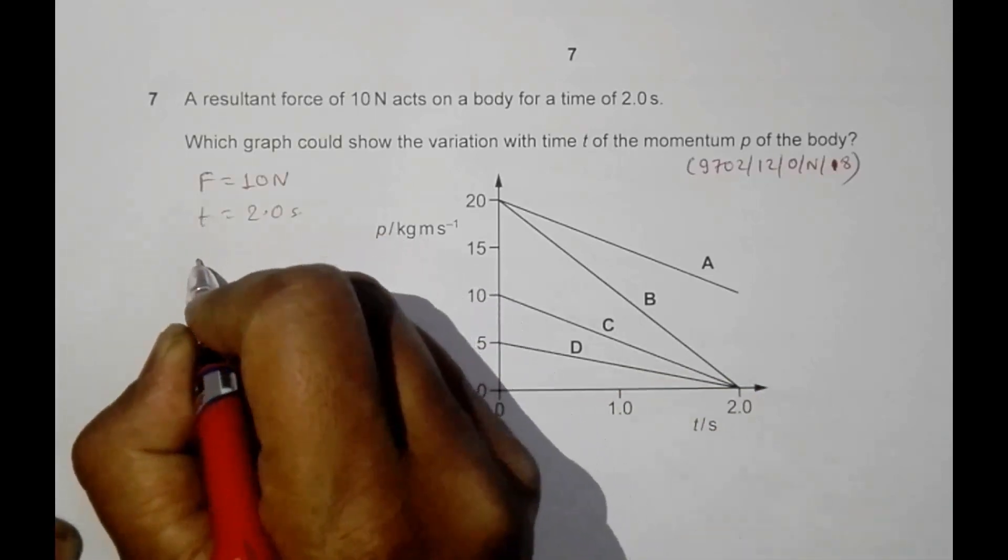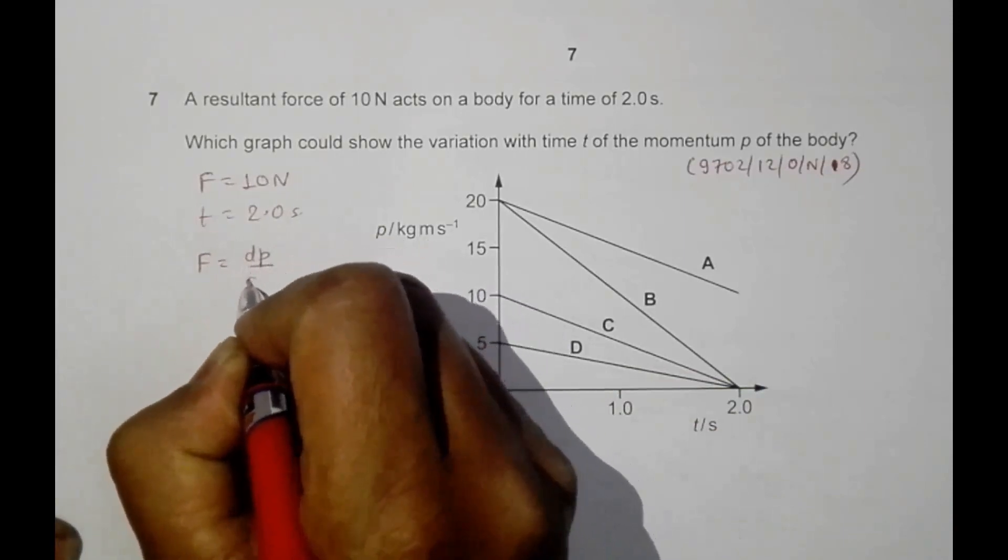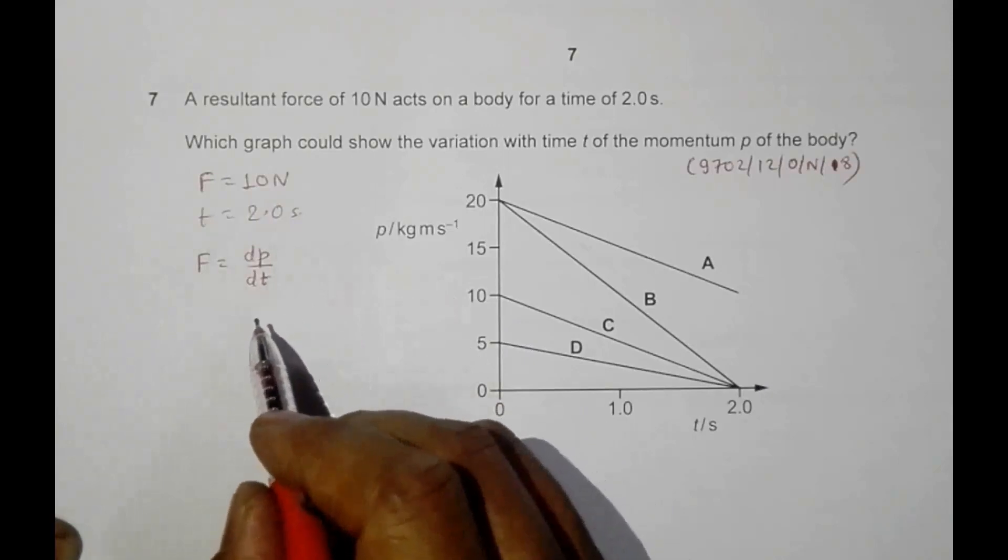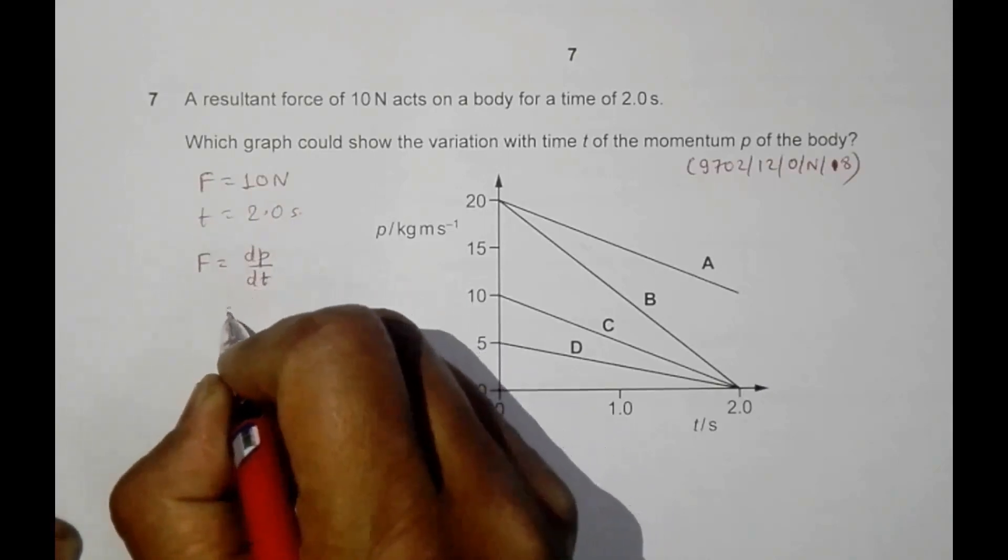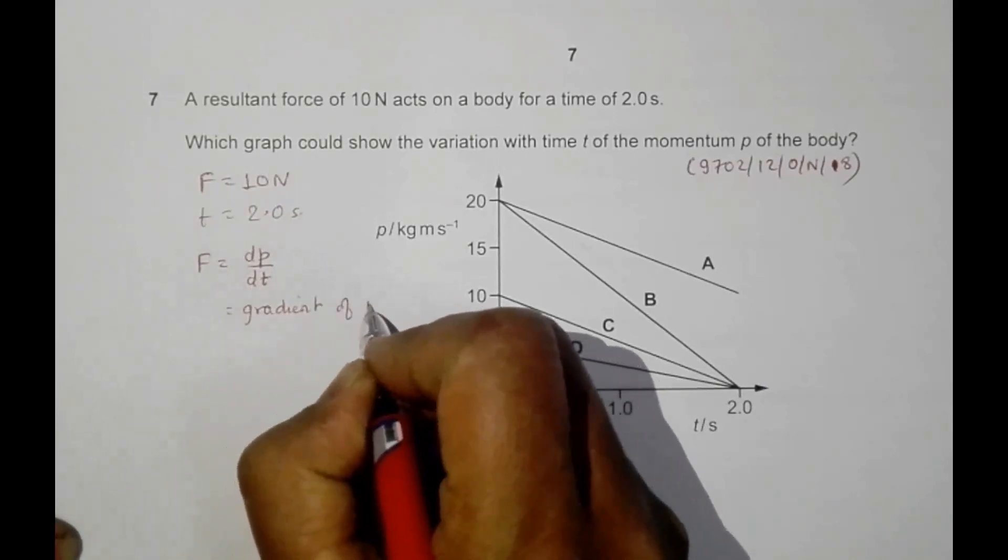What we should have is the value of force should be equal to dp by dt, which means that it should be equal to the gradient of the p and t graph.